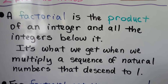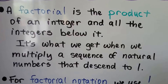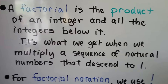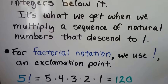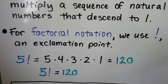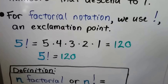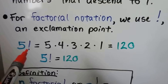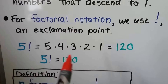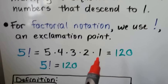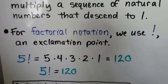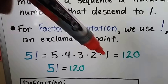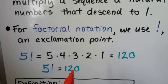A factorial is the product of an integer and all the integers below it. It's what we get when we multiply a sequence of natural numbers that descend to 1. For factorial notation, we use an exclamation point. Here we have 5 factorial — that's how you would read this with the exclamation point: 5 factorial. And it equals 5 times 4 times 3 times 2 times 1, which equals 120. It's a sequence of natural numbers that descend to 1. We can say 5 factorial is equal to 120.